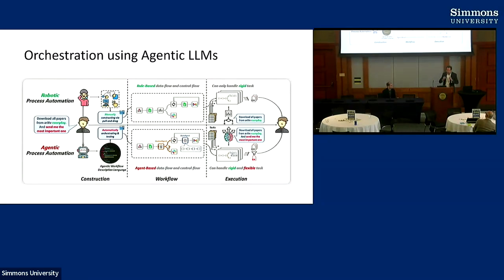We're looking to do this with what we call agent orchestration. Using large language models, we aren't limited to rule-based data flows which are very rigid and don't adapt well to new tasks. If we do it as a large language model agent, it's actually able to adapt if something goes wrong in the workflow and change its approach so that it runs in a way that's flexible and adaptable.